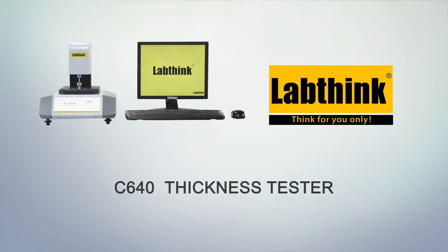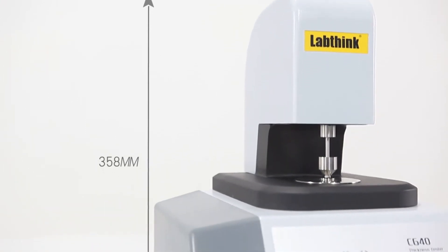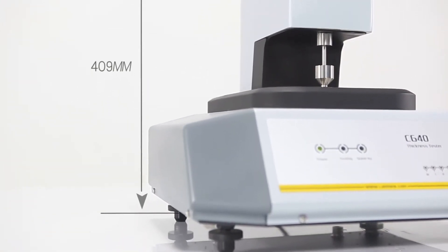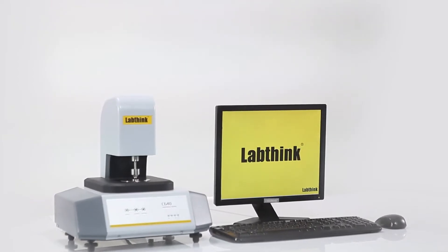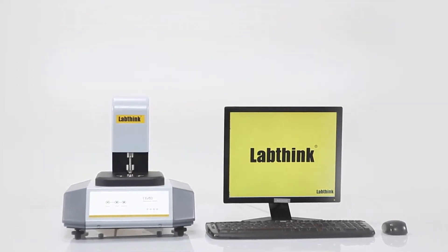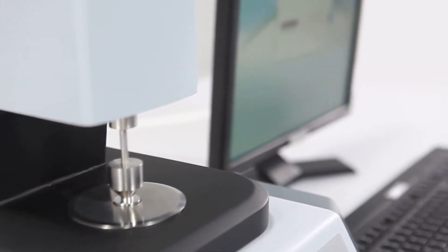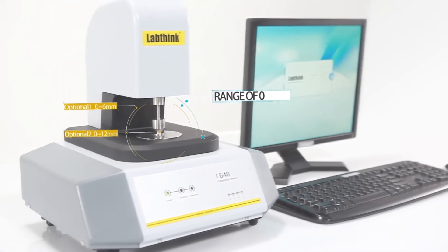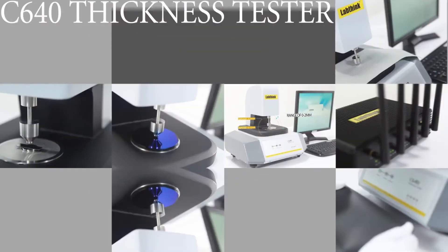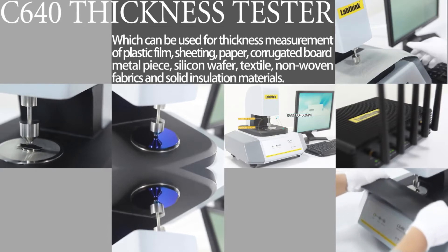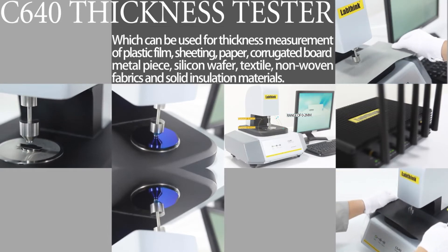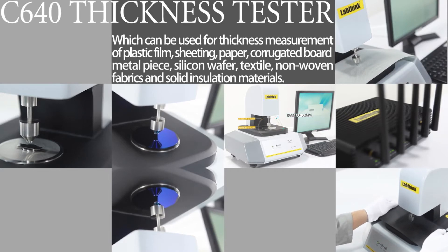C640 Thickness Tester. C640 is a high-precision mechanical contact method thickness tester within its test range of 0 to 2 millimeters which can be used for thickness measurement of plastic film, sheeting, paper, corrugated board, metal piece, silicon wafer, textile, non-woven fabrics, and solid insulation materials.